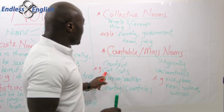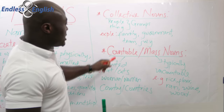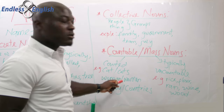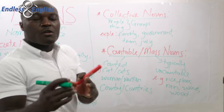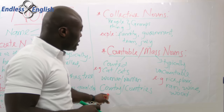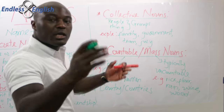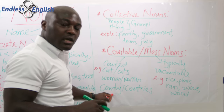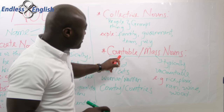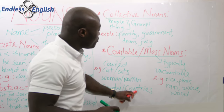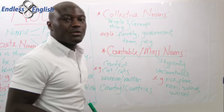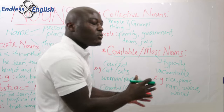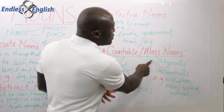For example, countable nouns: a cat — plural: cats. A woman — plural: women. A man — plural: men. A country — plural: countries. You can count these because there are many countries in Africa, for instance. Countable nouns always have a singular and a plural version.